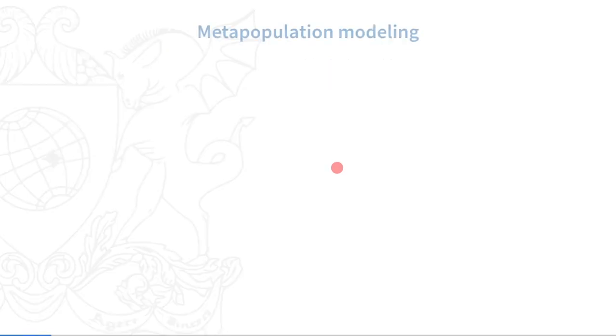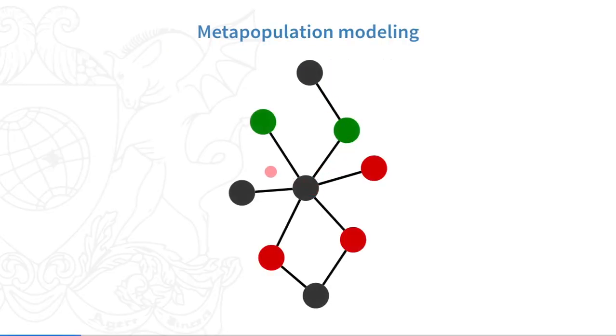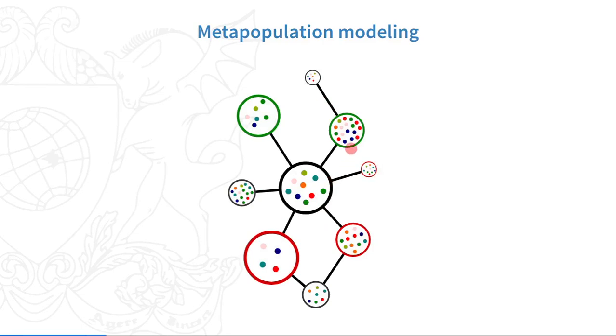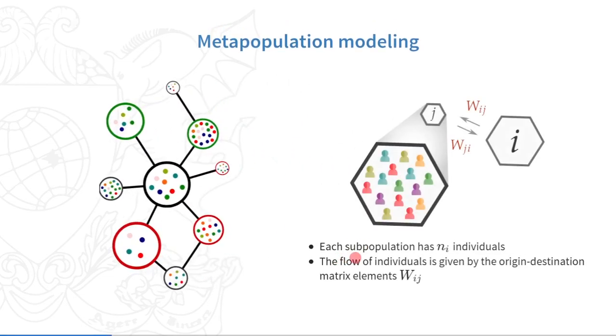With metapopulation modeling, we can split the population into a network of connected patches. Each patch hosts a subpopulation of n_i individuals, and the flows are given by an origin-destination matrix indicating the number of people moving recurrently from one place to the other.